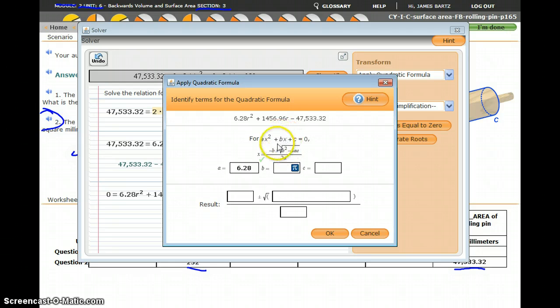And b is the value in front of the single variable, so I'm going to put 1456.96. And c is the constant term, and so mine is negative, so I'm going to type in negative 47,533.32.